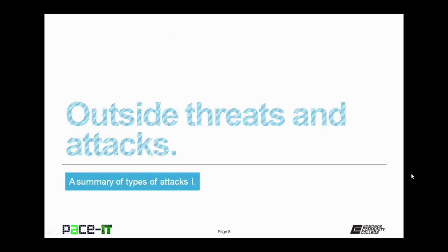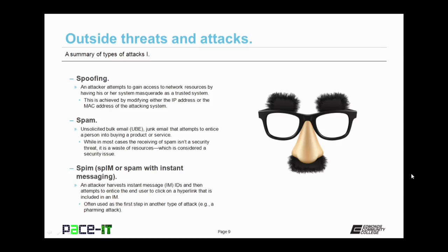With that covered, let's move to outside threats and attacks. We begin with spoofing. An attacker attempts to gain access to network resources by having his or her system masquerade as a trusted system. This is achieved by modifying either the IP address or the MAC address of the attacking system so that it looks like a trusted system. Spam is unsolicited bulk email or junk mail that attempts to entice a person into buying a product or service. While in most cases the receiving of spam isn't a security threat, it is a waste of resources which is considered a security issue.